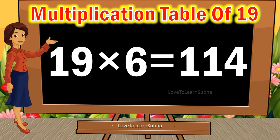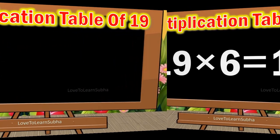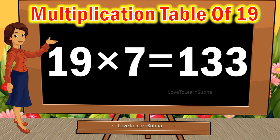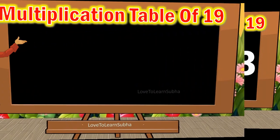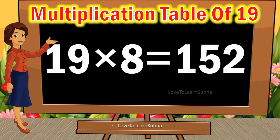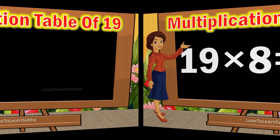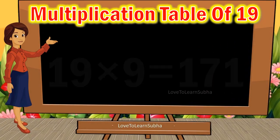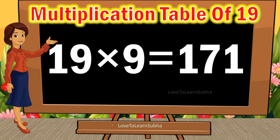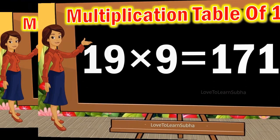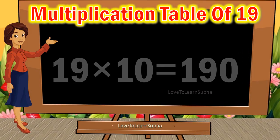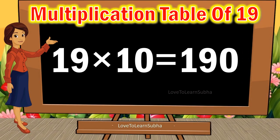Nineteen sixes are 114. Nineteen sevens are 133. Nineteen eights are 152. Nineteen nines are 171. Nineteen tens are 190.